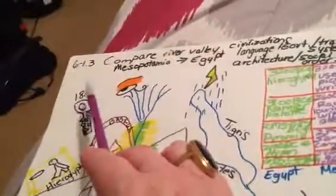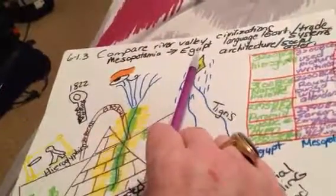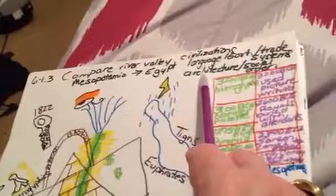But we're actually looking at the Standard 613, so we're comparing the two River Valley civilizations of Mesopotamia and Egypt by using their language, government, trade systems, architecture, and social order.